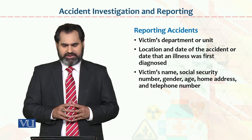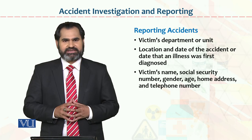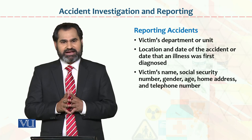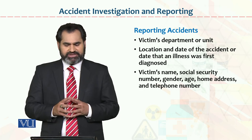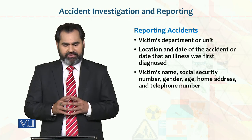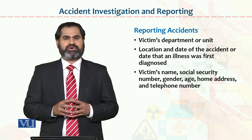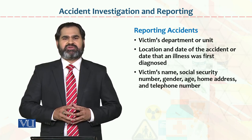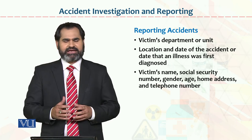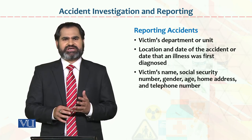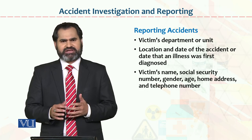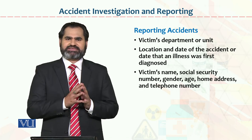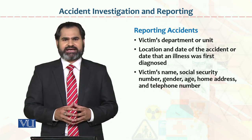Reporting accidents mein: number one — victim department, ke kahan yeh accident ki activity hui. Location and date — kahan pe, kis jagah aur kis date ko. Victim's name, social security number, gender, age, home address, and telephone number. Jab tak yeh complete information aapke paas nahi hogi, aap kabhi bhi complete comprehensive report prepare nahi kar sakti. Yeh demographic characteristics hain — gender, name, age, nationality, culture ya uska address. Yeh common information hai jo job lete waqt employee form fill karke submit karta hai, to wahaan se woh information aasani se check ki jaa sakti hai.